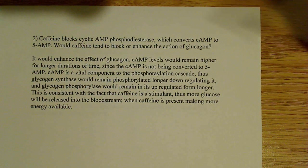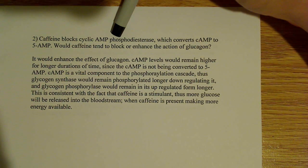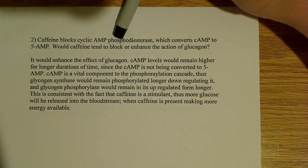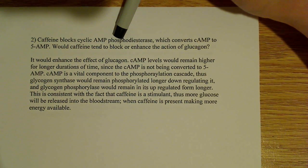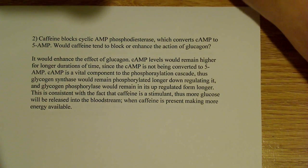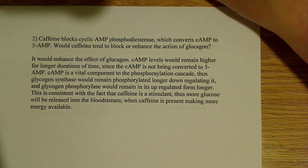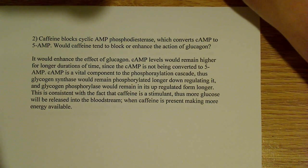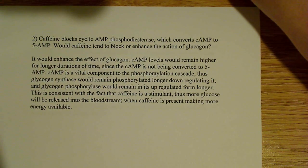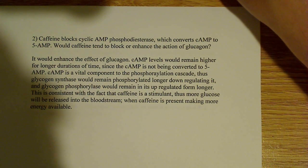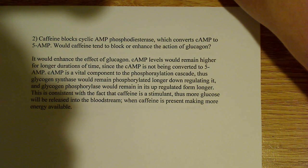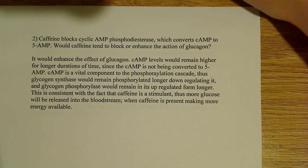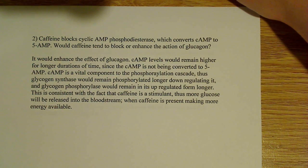Normally, cyclic AMP phosphodiesterase converts cyclic AMP to 5' AMP, but that's not happening. And if that's not happening, then cyclic AMP is not going to be converted to 5' AMP, which means it's going to be available for longer durations. Since cyclic AMP is a vital component of the phosphorylation cascade discussed in the previous video, it is a very important molecule — it produces and works through protein kinase A.